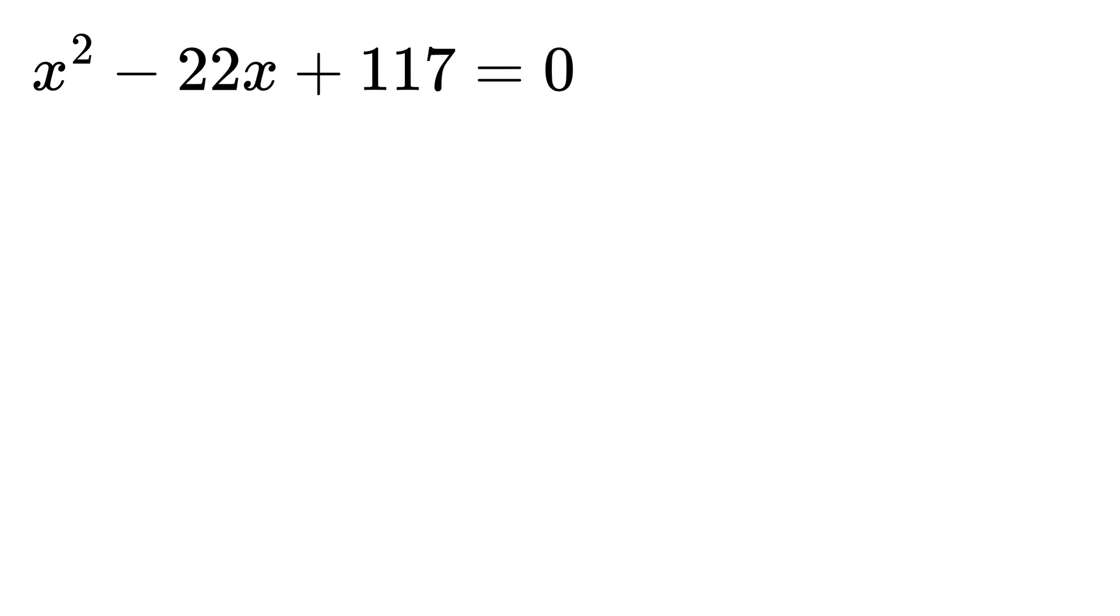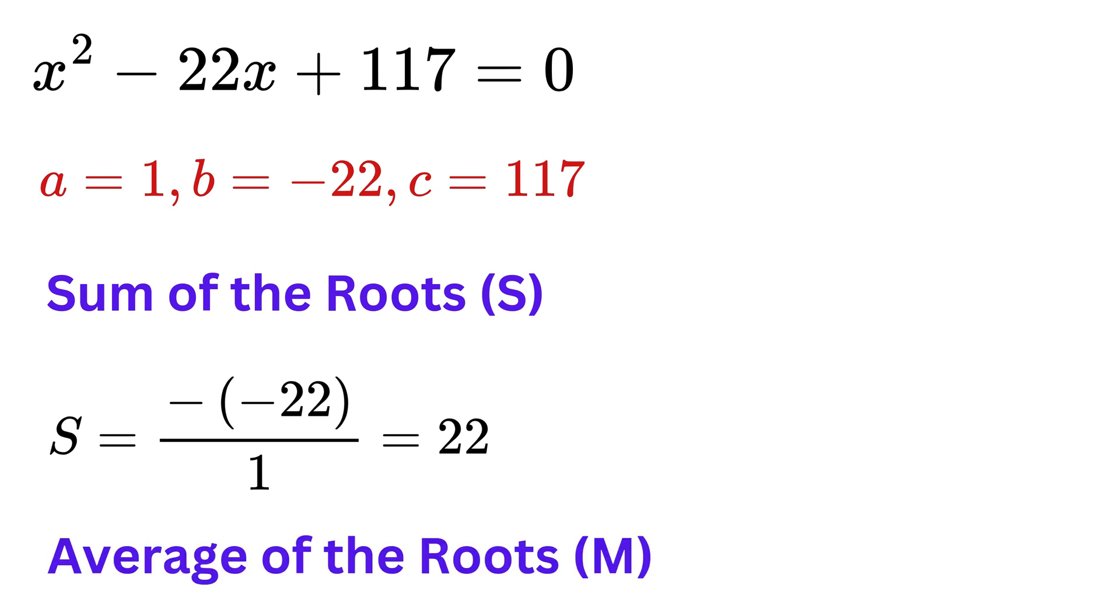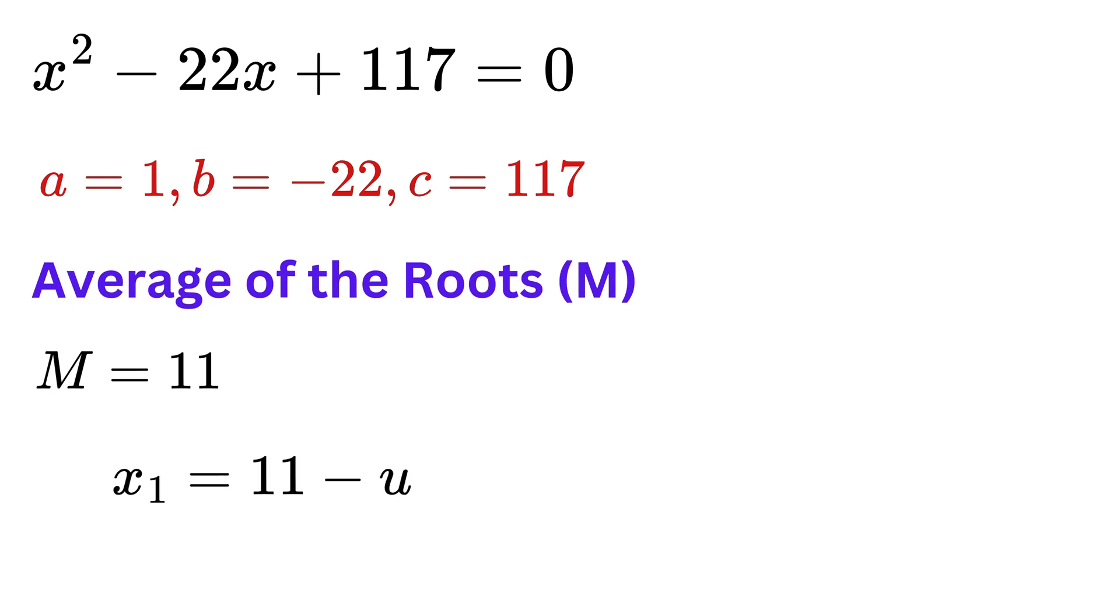Now, let us use this example. Here, A equals 1, B equals minus 22, and C equals 117. The sum of the roots will therefore equals minus of minus 22 over 1 or 22, and thus the average of the roots will be 11. Now, let one of the root of this equation be 11 minus U, and the other root be 11 plus U.